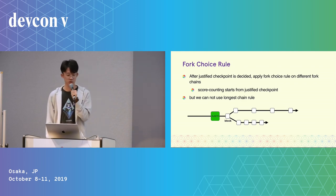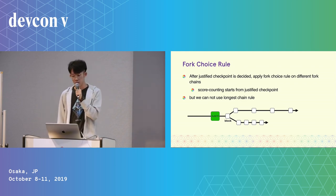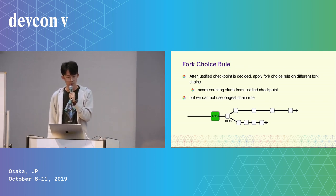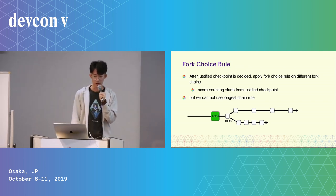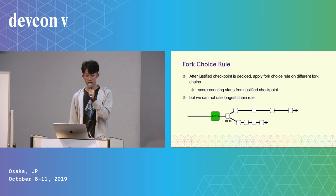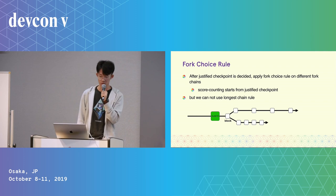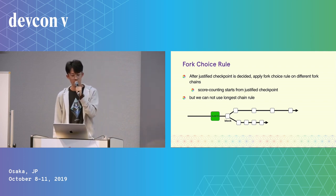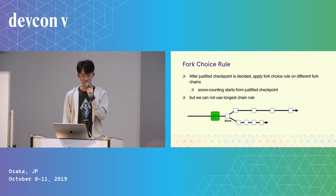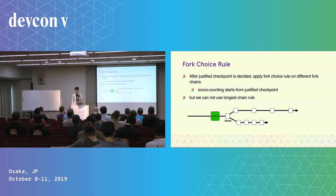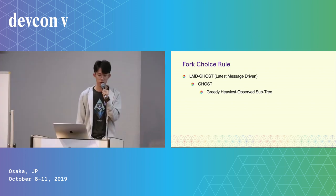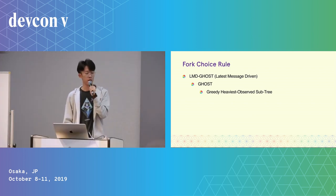After the justified checkpoint is decided, we apply the fork-choice rule on different fork chains. The score counting starts from the justified checkpoint. But we cannot use the longest chain rule because, as previously mentioned, an attacker can secretly create super long fork chains at any time. So what fork-choice rule do we use? We use LMD GHOST.